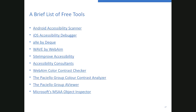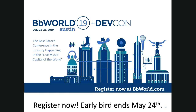Some free things to use: Android provides an accessibility scanner; there's an iOS accessibility tool. Axe by Deque, Wave by WebAIM, and Siteimprove all have free accessibility tools. I've also included links to the WebAIM color contrast checker, the Passiello contrast checker, the Passiello Group A viewer (similar to Microsoft's MSA Object Inspector), and a list of accessibility consultants. Christopher in the chat has been adding extra tools there as well.